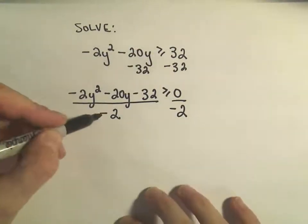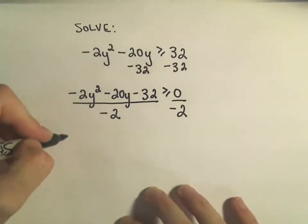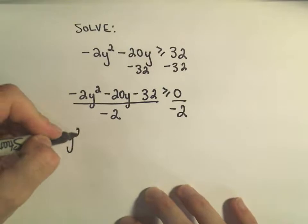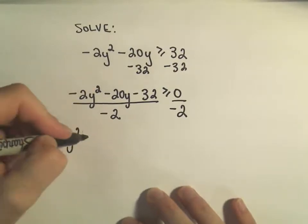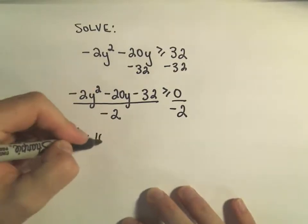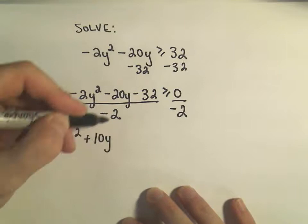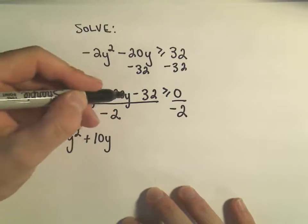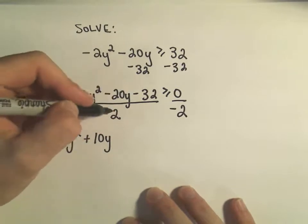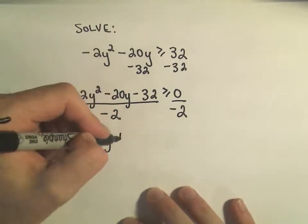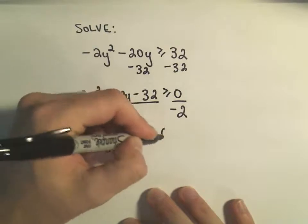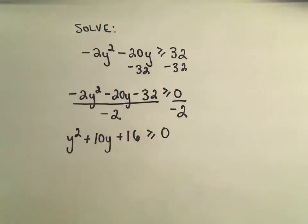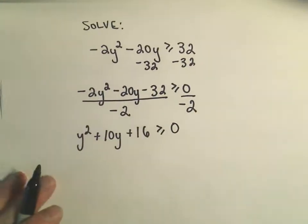Negative 2 over negative 2 is positive 1y squared. Negative 20 over negative 2 is positive 10y. And negative 32 over negative 2 is positive 16. So we're trying to figure out when this is greater than or equal to zero.